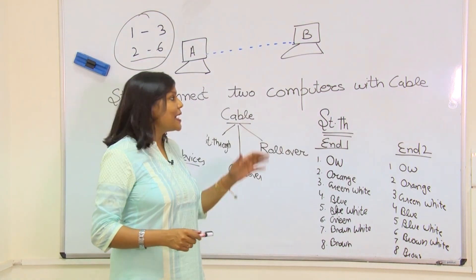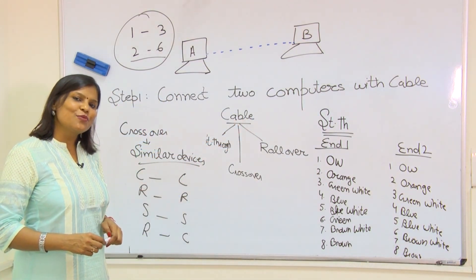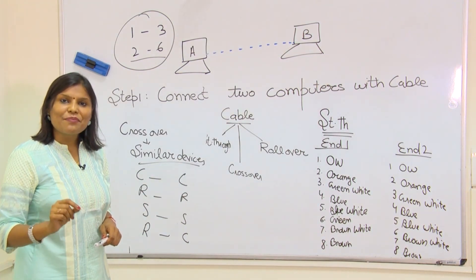Now this completes our first step, that is connect two computers with cable. Now let's move towards the second step, that is to change the IP address.